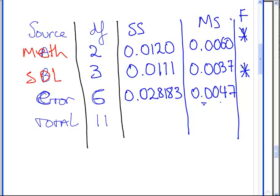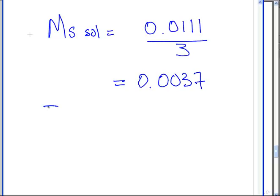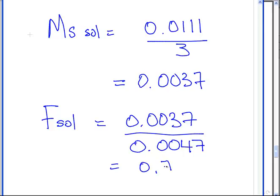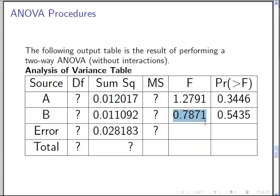The test statistic for solution is 0.0037 divided by 0.0047, which gives approximately 0.7872. That matches the value in the table, within rounding error. That completes the ANOVA table.